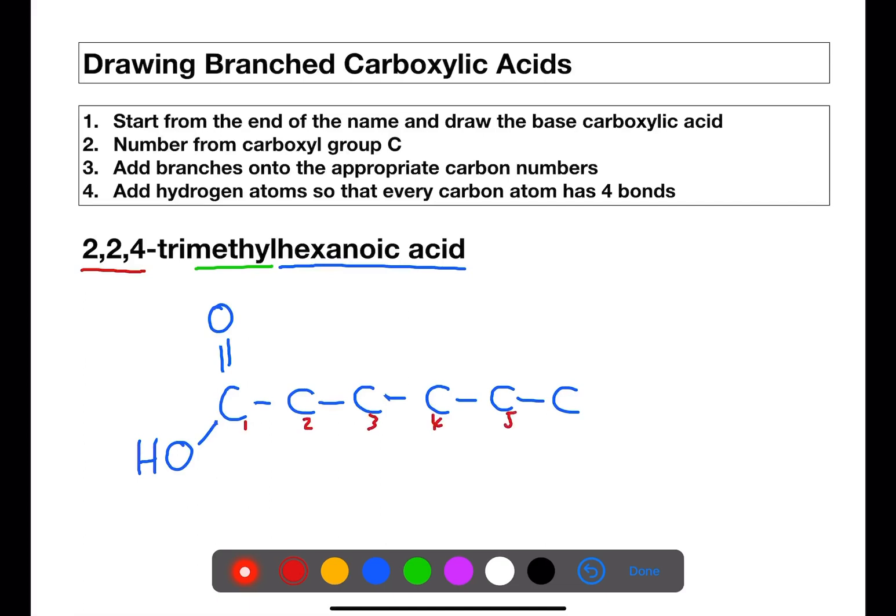We can then number the rest of the carbons and add in the three branches. We have a methyl group on two, a second methyl group on two and another methyl group on number four. We can then go around the structure and fill in to make sure that every carbon has four bonds.